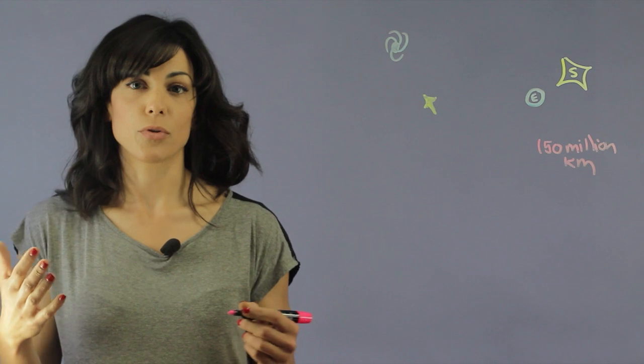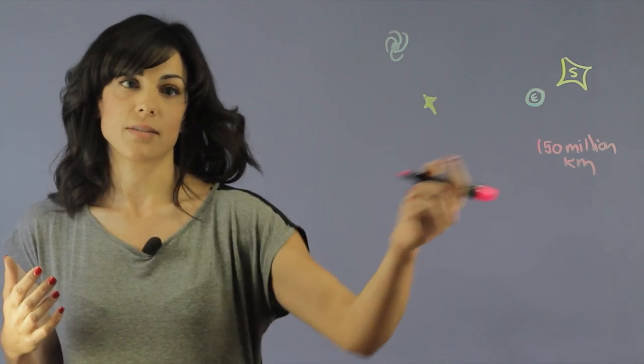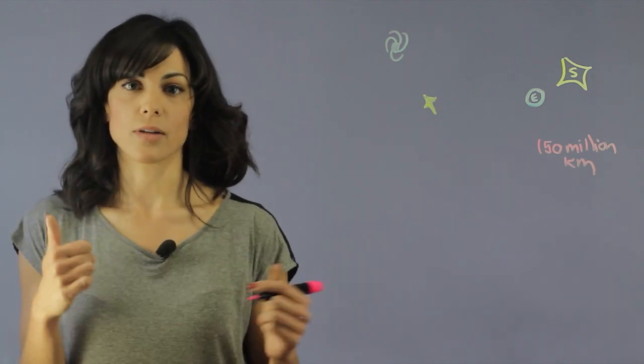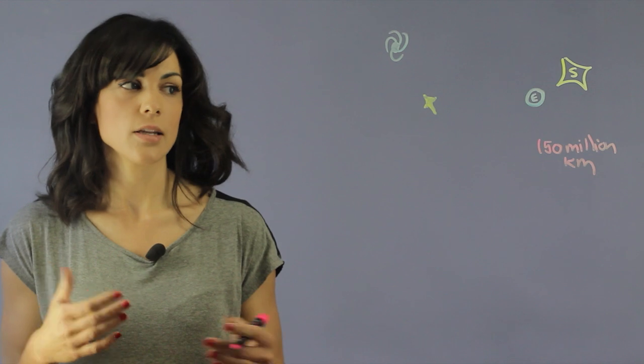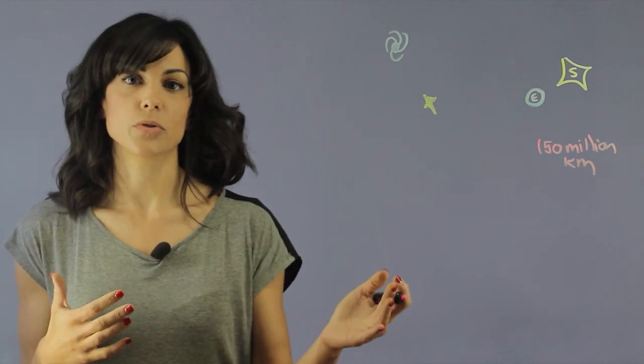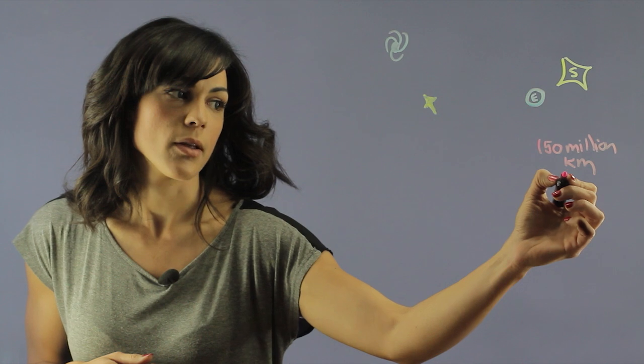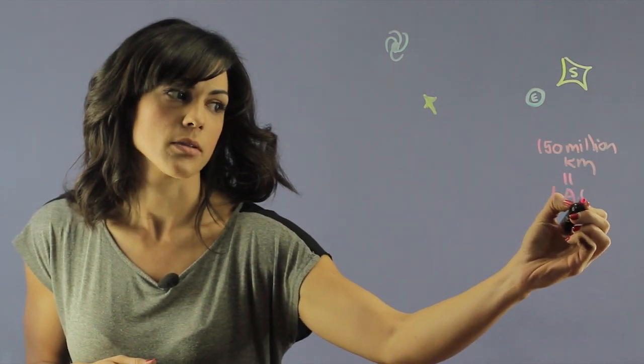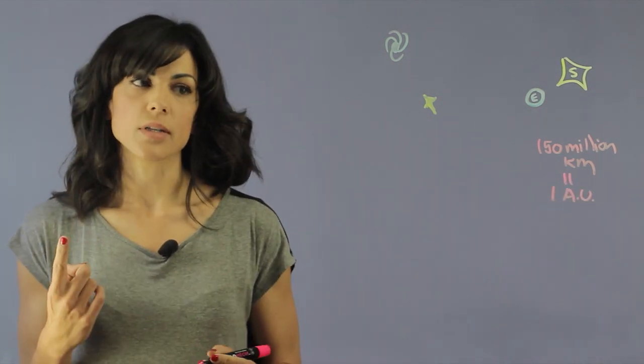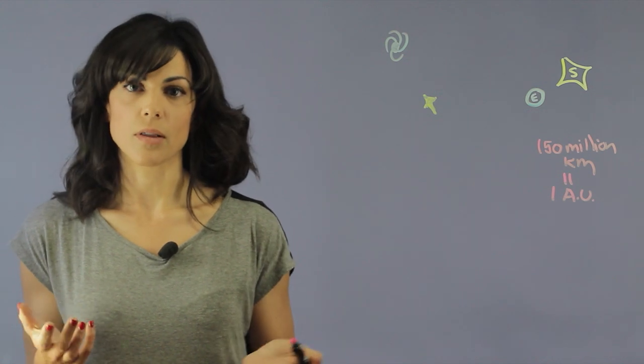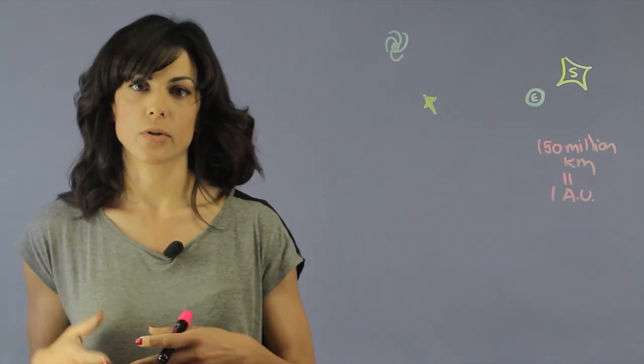especially because if you're gonna start calling everything by this distance, oh this is two times further than the Earth is from the Sun, then it becomes a difficult number to have as a reference unit. So this reference unit, we made it equal to one astronomical unit. So one astronomical unit is equal to 150 million kilometers and that's the distance from the Earth to the Sun.